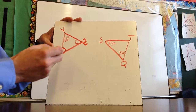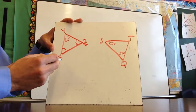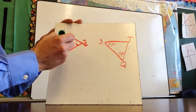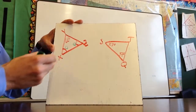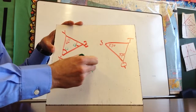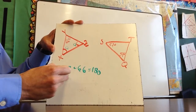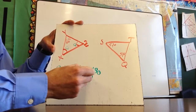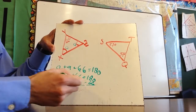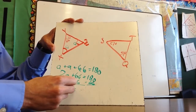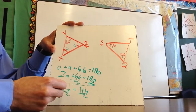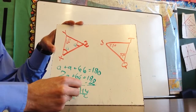One way to do it: I know that these two are congruent, so let's call them A and A. I know that A plus A plus 66 equals 180, so 2A plus 66 equals 180. Subtracting 66 from both sides gives 2A equals 114. Dividing by 2, A equals 57.